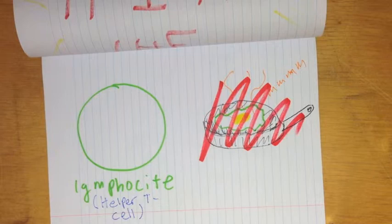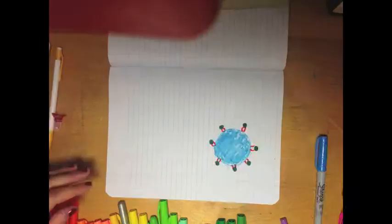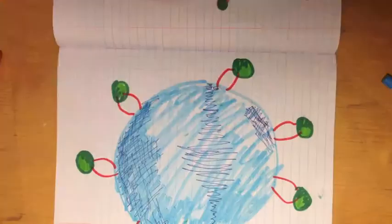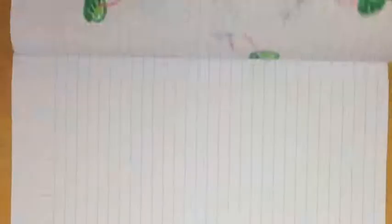But this particular lymphocyte is a helper T cell. And what a helper T cell does is it finds pathogens such as bacteria and viruses and then calls out for other cells to come destroy them. So, look at this helper T cell. It is 1 micron across, or 10,000 nanometers. And this little 100 nanometer thing is HIV, the human immunodeficiency virus, aka a helper T cell's worst enemy.